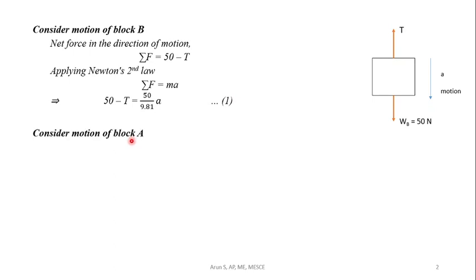Consider the motion of block A. The direction of motion is towards right. Tension towards right acts on it. In this contact surface, there will be friction force acting in the opposite direction. F is equal to mu into WA.